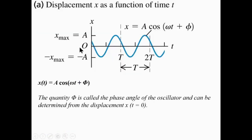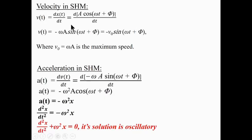Once you have position as a function of time, velocity is found by taking the time derivative: v = -ωA sin(ωt + φ). The quantity ωA is the velocity amplitude, or maximum speed v₀. Taking one more time derivative gives acceleration: a = -ω²A cos(ωt + φ). Since A cos(ωt + φ) is just x(t), this simplifies to a = -ω²x.